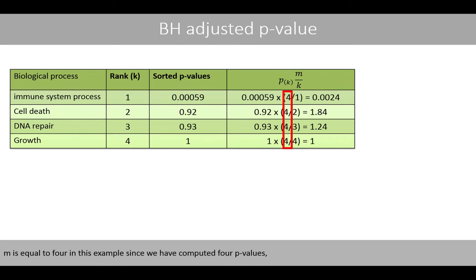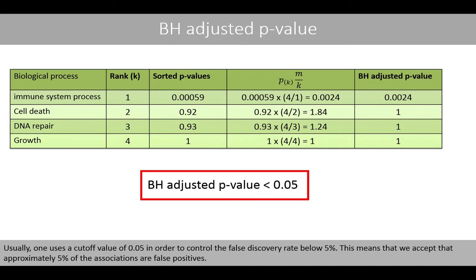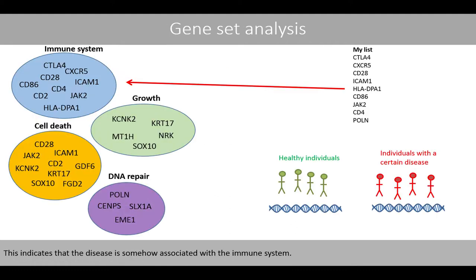m is equal to 4 in this example, since we have computed 4 p-values, and k is the rank of the corresponding p-value. After we have adjusted the p-values according to the Benjamini-Hochberg procedure, we'll have the following adjusted p-values. Usually, one uses a cutoff value of 0.05 in order to control the false discovery rate below 5%. This means that we accept that approximately 5% of the associations are false positives. Since this p-value is less than 0.05, we can conclude that the genes involved in the immune system process are significantly overrepresented in my list of genes. This indicates that the disease is somehow associated with the immune system.